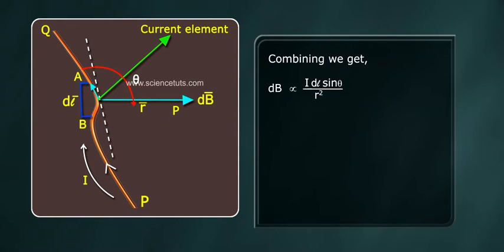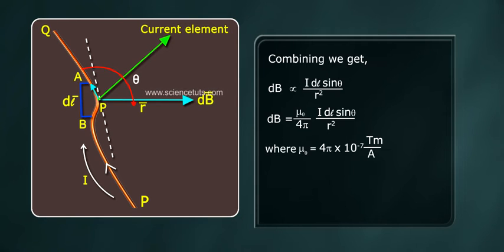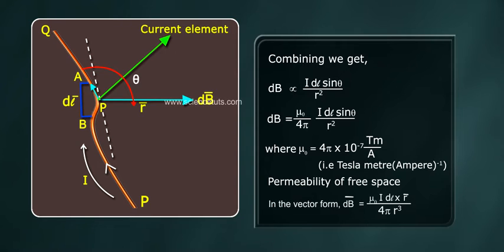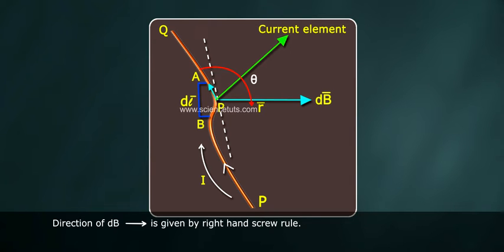Combining we get, dB equals mu0 I DL sine theta by 4 pi R-square, where mu0 equals 4 pi times 10 power minus 7 Tm by A (that is Tesla meter Ampere inverse) and is called permeability of free space. In the vector form, dB bar equals mu0 I DL cross R bar by 4 pi R cube.